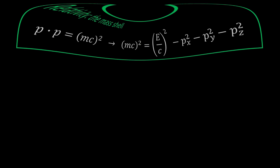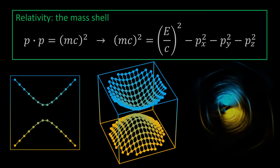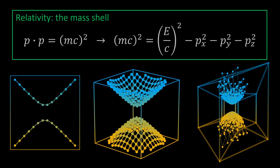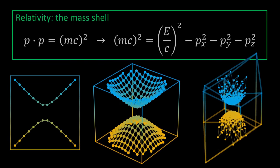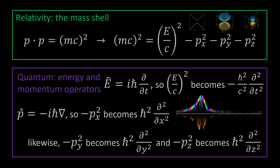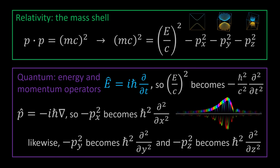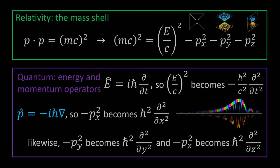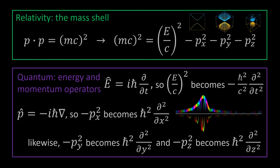We want to unify special relativity and quantum mechanics. Let's begin our derivation with a principle from special relativity — in particular, we'll start with the mass shell. As we saw in the other video, the mass shell determines the relationship between energy, momentum, and mass in special relativity. Now for the quantum mechanical part, we're going to take our quantum mechanical energy and momentum operators: the energy operator is i times ħ times the partial derivative with respect to t, and the momentum operator is negative i times ħ times the gradient.